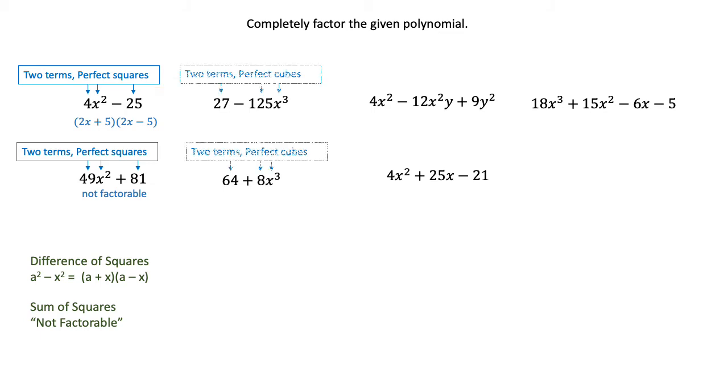If you have two terms and you've got perfect cubes in those terms—27, 125, 64, 8, x cubed—all of those are perfect cubes.